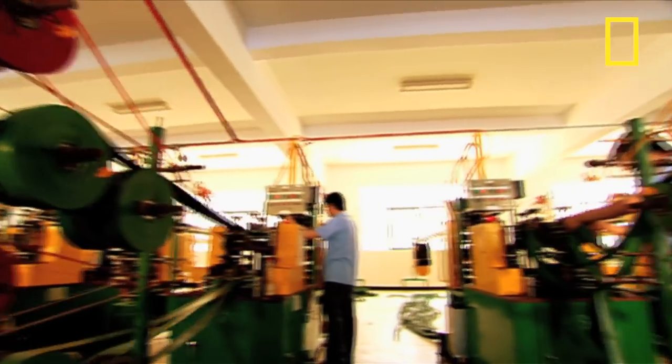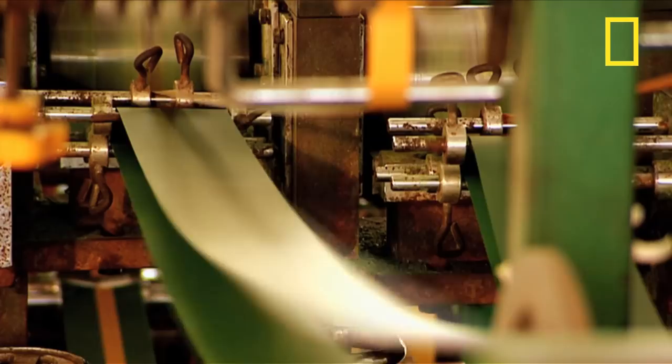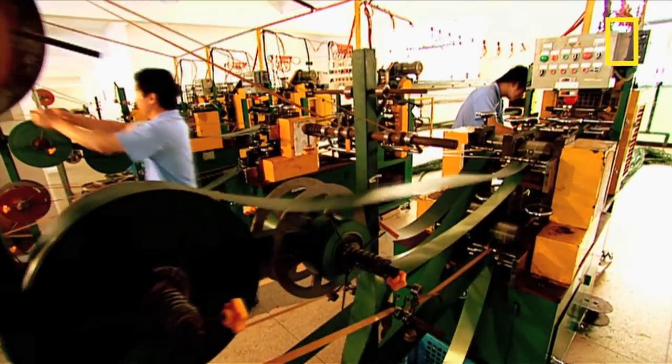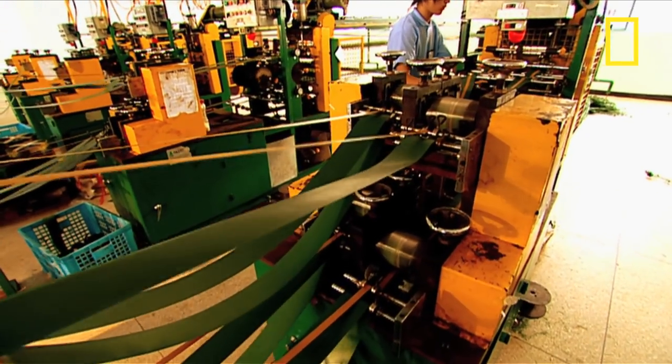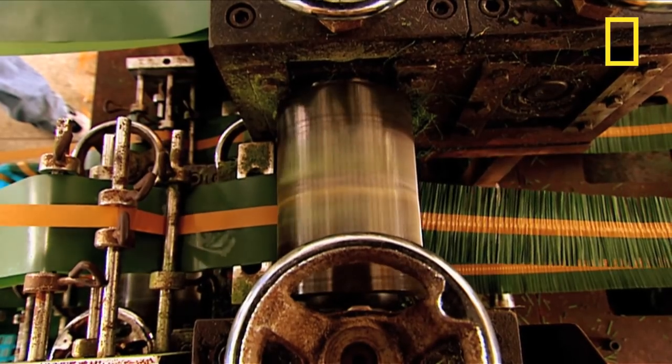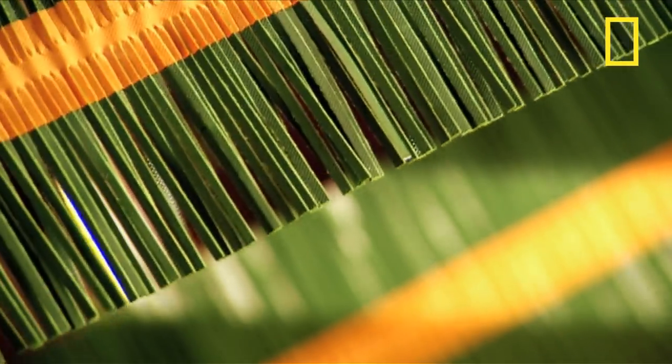The branches start out as flat strips of polyvinyl chloride or PVC to you and me. The reels are unraveled and as they pass through rollers they're bonded and stick together. Then a circular blade slices through the PVC, shredding it and making the needles.